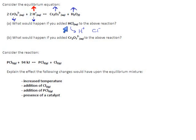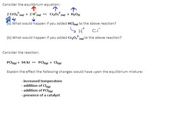The red represents our intervention — we added hydrochloric acid, which is the stress. The blue happens after, and that's the system trying to recover and undo this stress. It will consume chromate and hydrogen ions, produce dichromates and water.